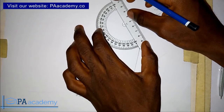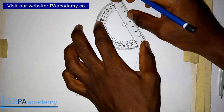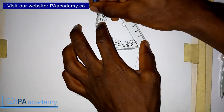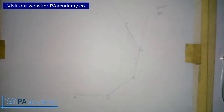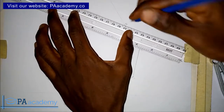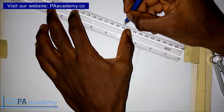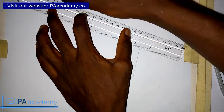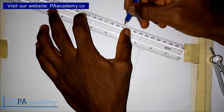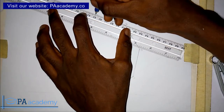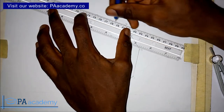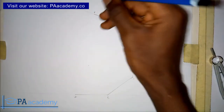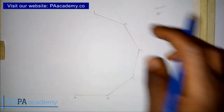The same thing again from point E — measure 40 degrees, mark it, draw a line from point E to the 40-degree mark, then measure five centimeters: one, two, three, four, five. So that five centimeter mark gives us point F. We already have one, two, three, four, five sides done.